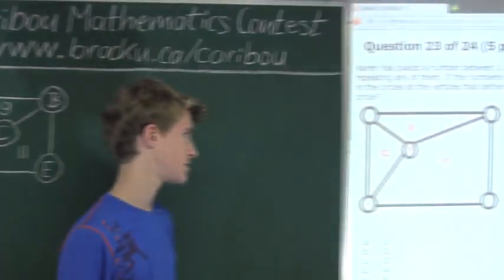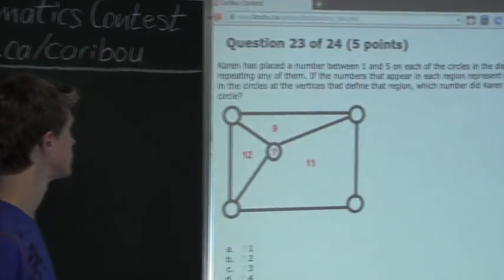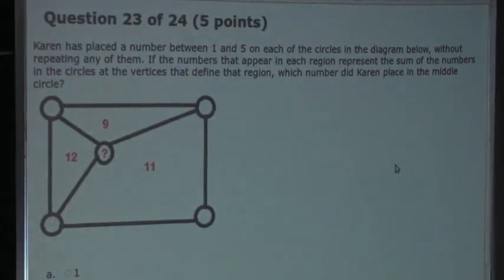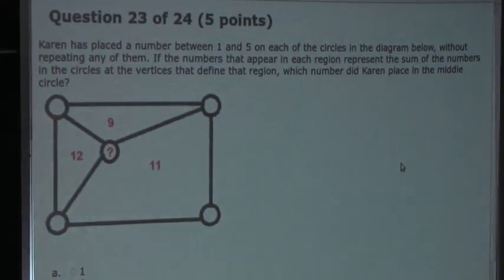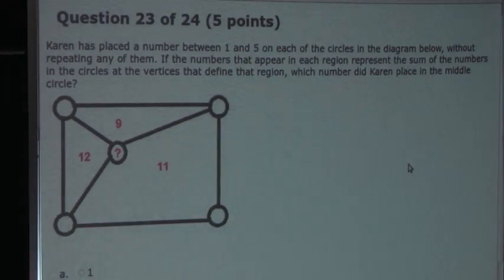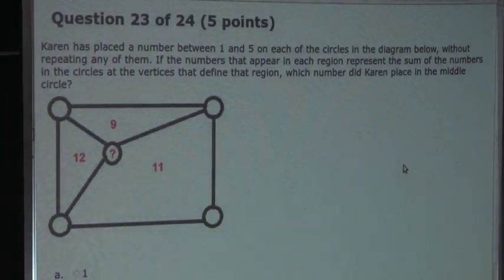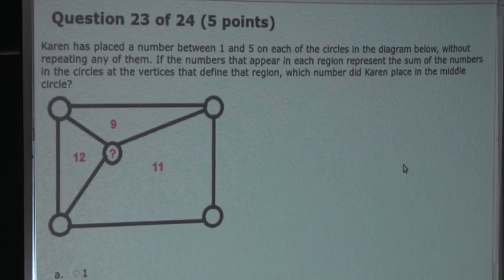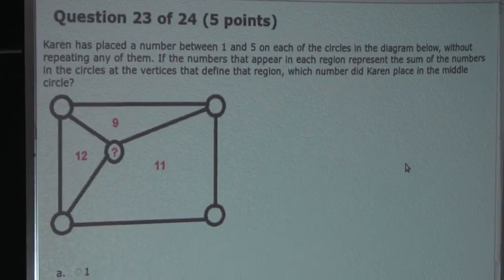So the question is: Karen has placed a number between 1 and 5 on each of the circles in the diagram below, without repeating any of them. If the numbers that appear in each region represent the sum of the numbers in the circles at the vertices that define that region, which number did Karen place in the middle circle?